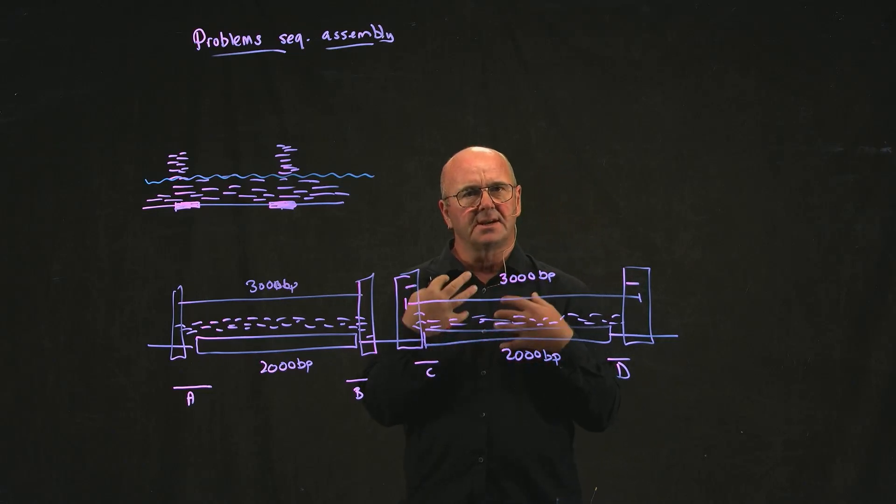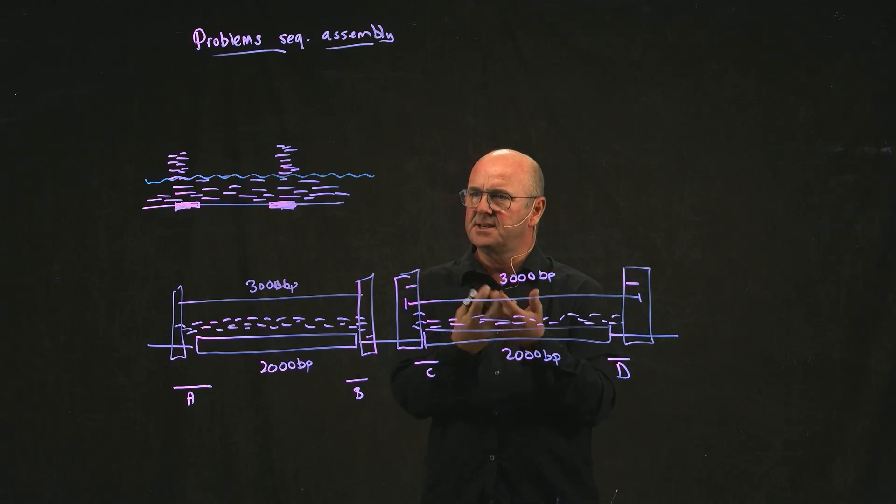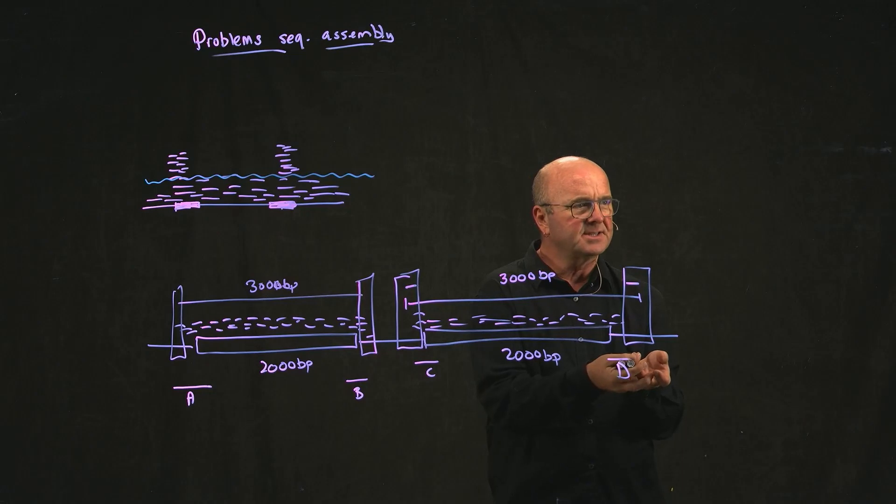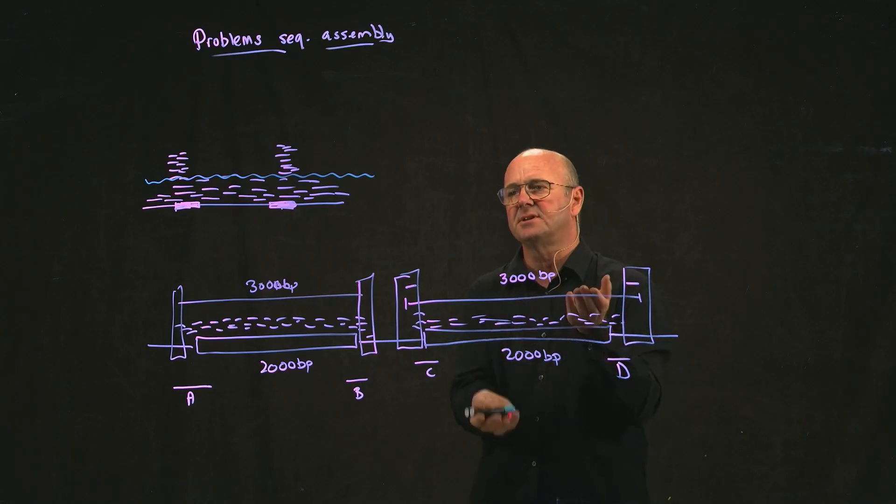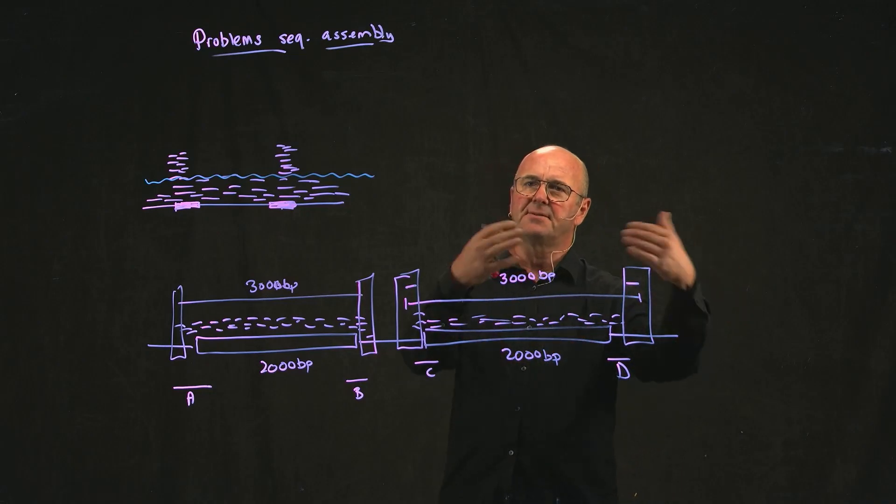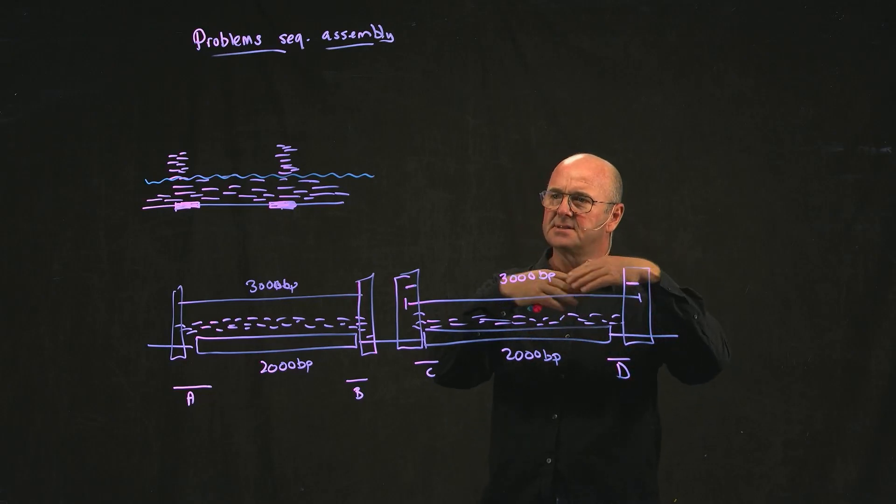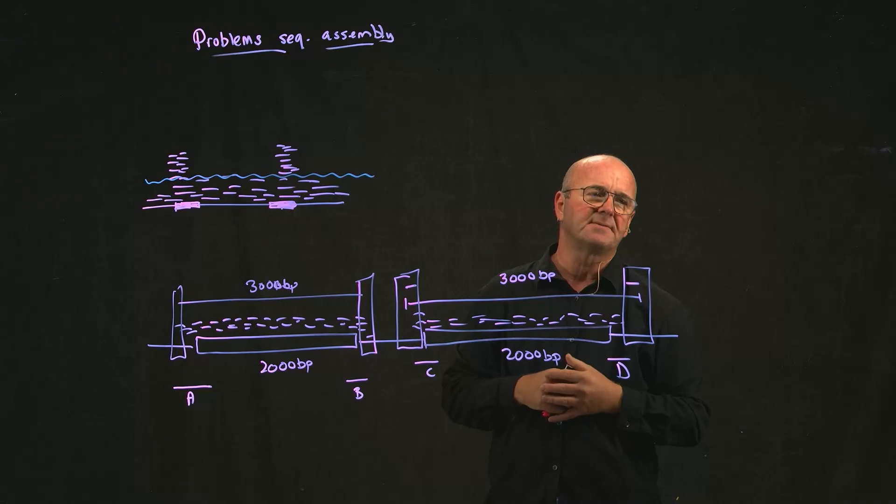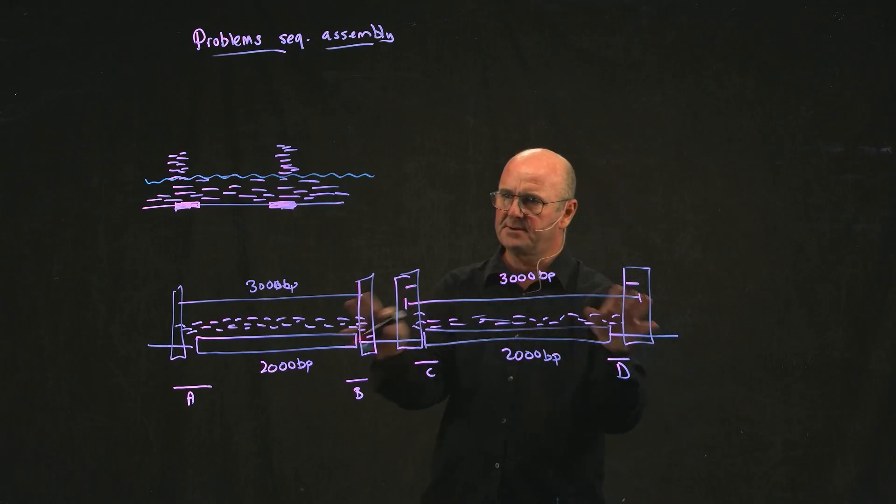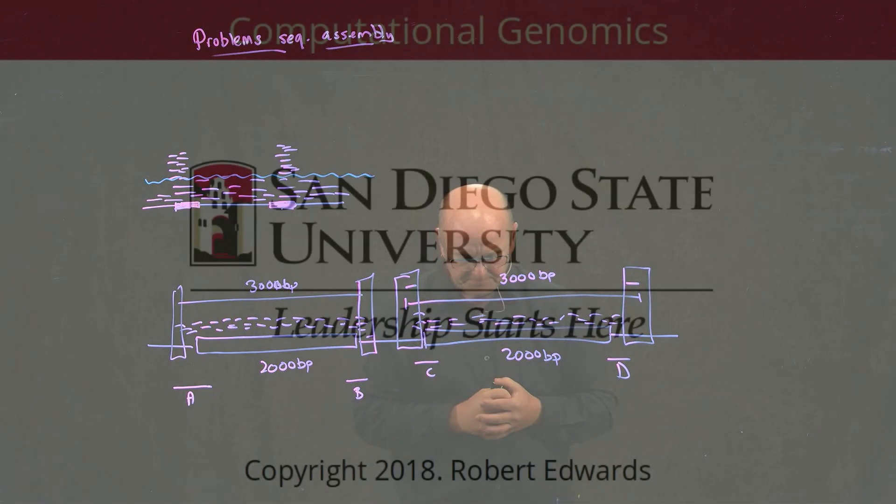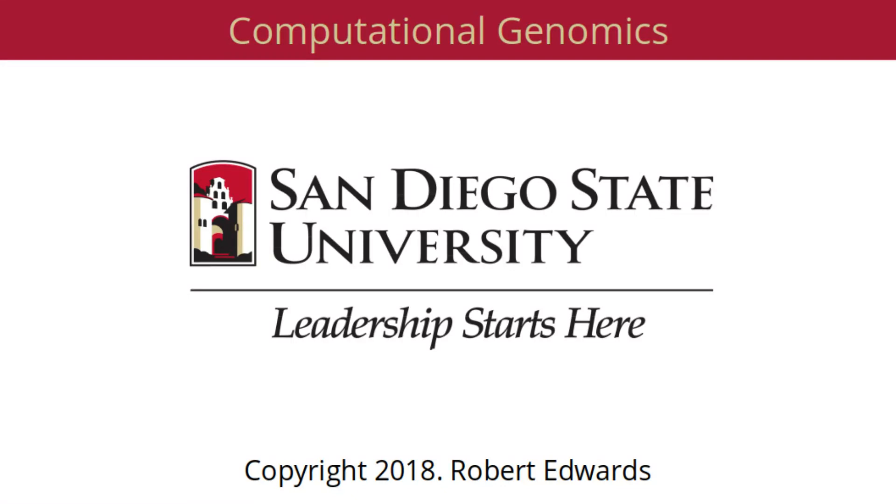And each sequencing group, facility, person, has their own preference, because they all have pros and cons. As I mentioned, if you have 300 base pair fragment libraries, you can overlap the sequences. If you have 3,000 base pair fragment libraries, you can map longer regions. So if you have 6,000 base pair fragment libraries, you can...